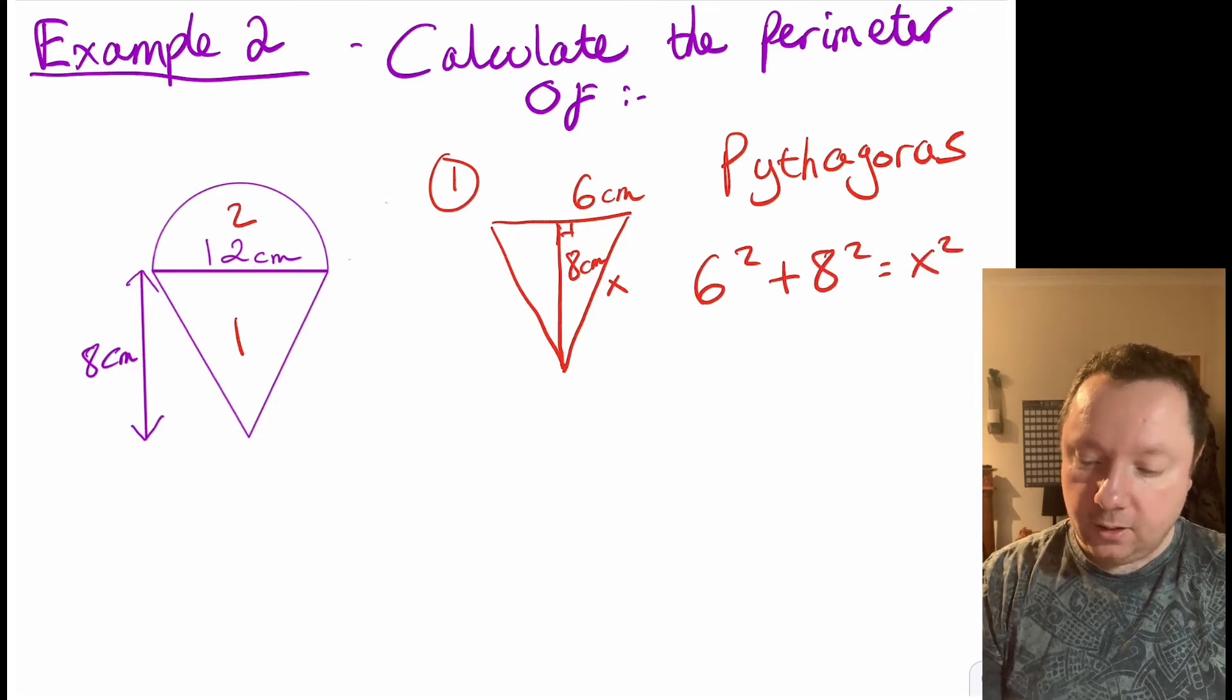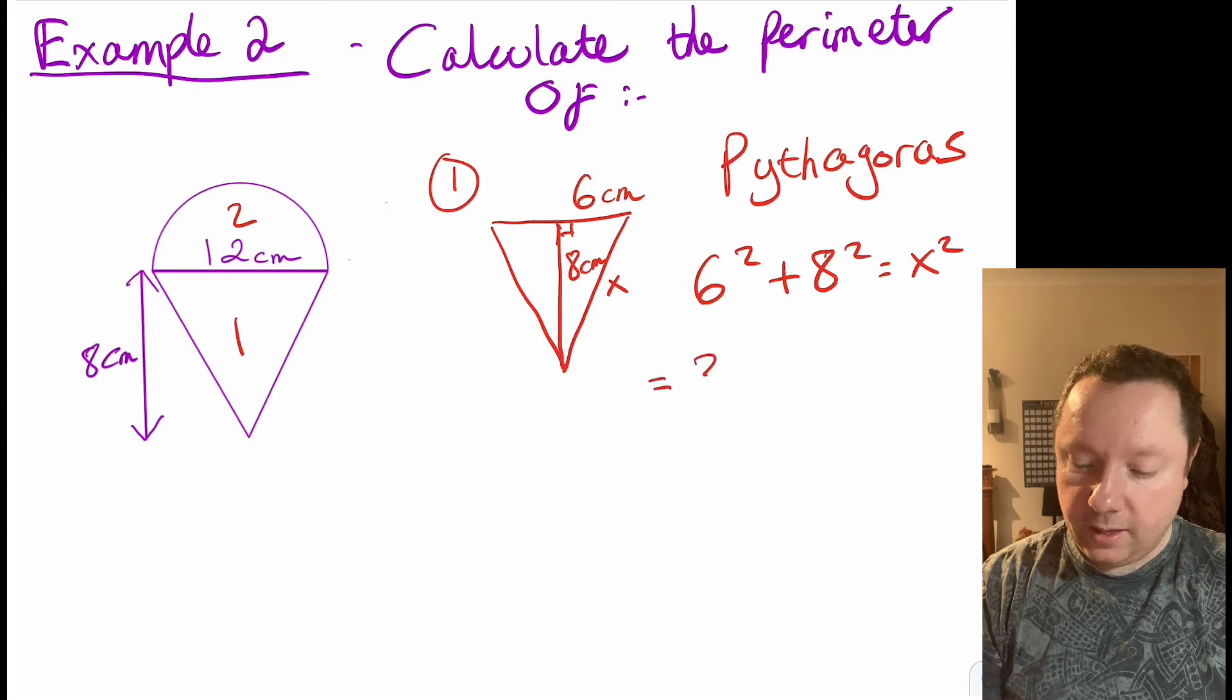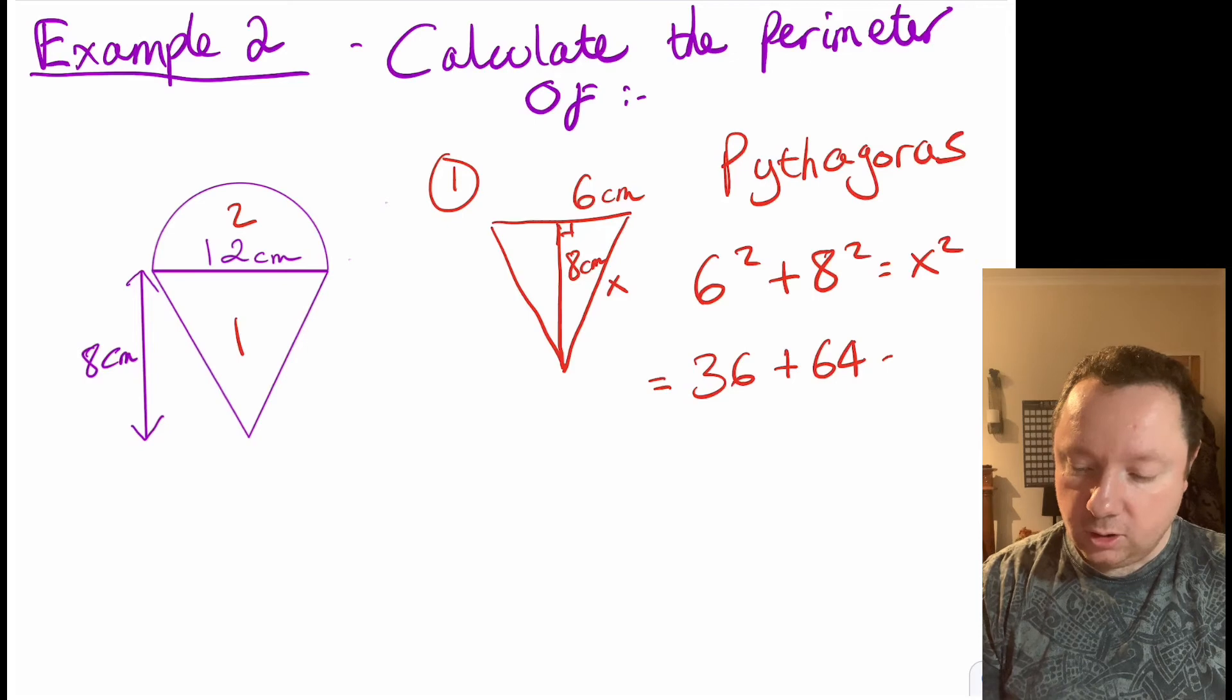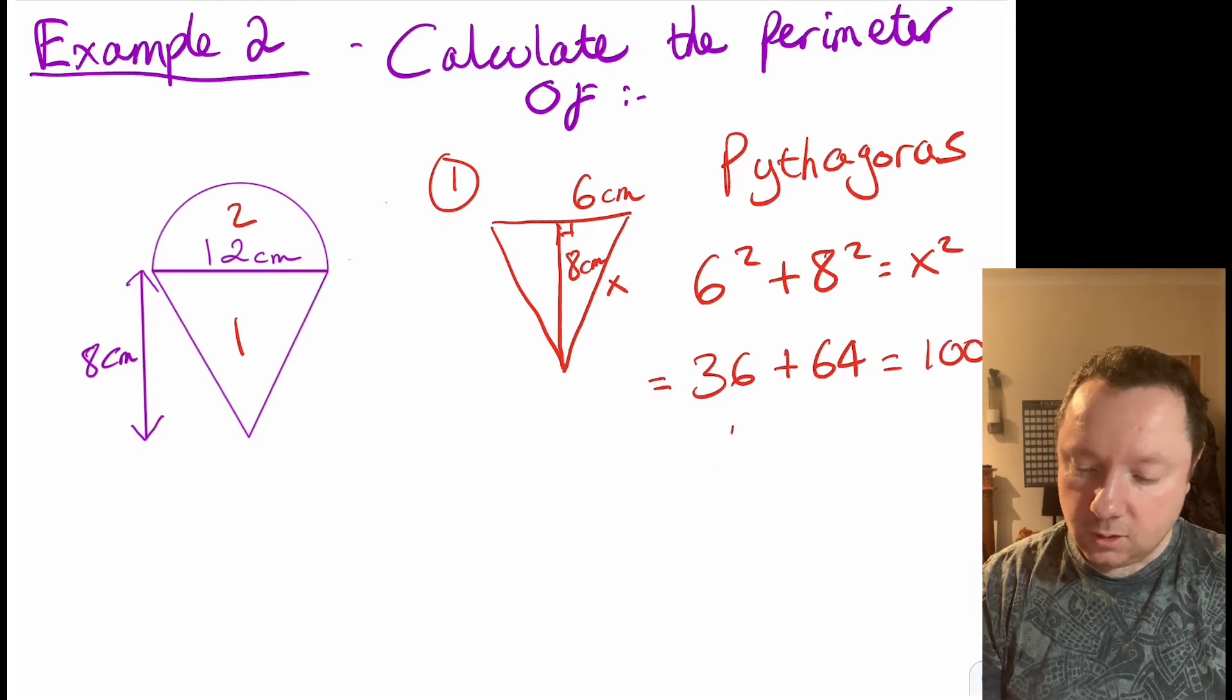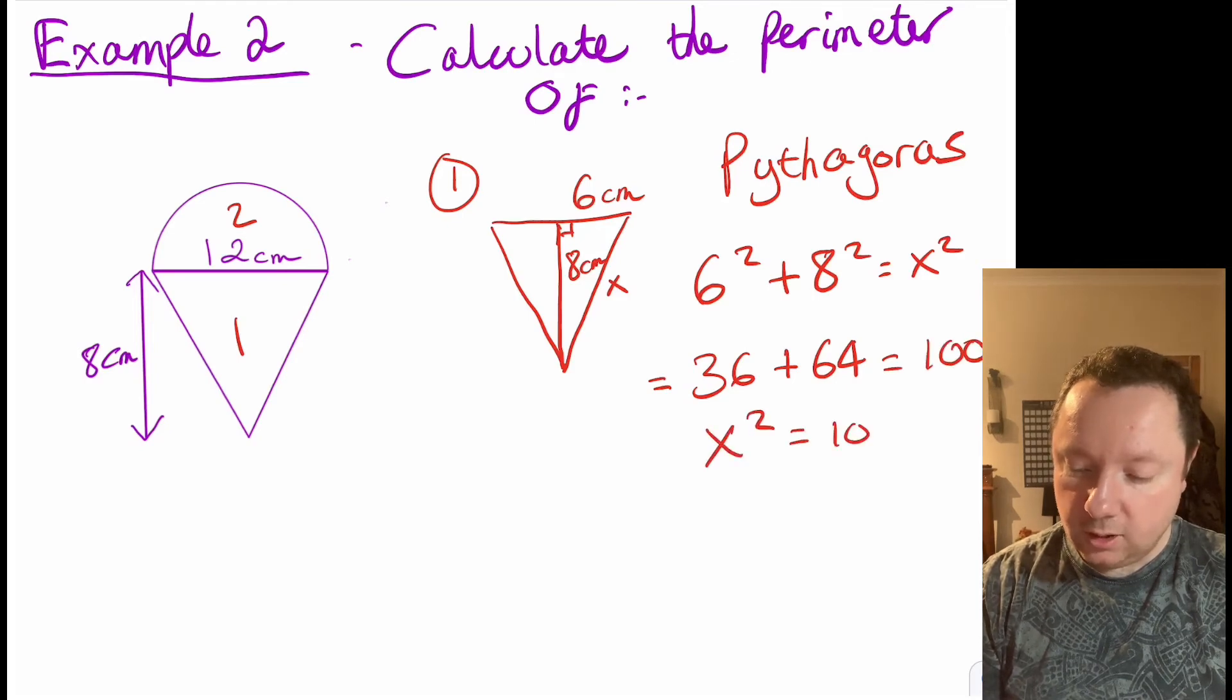So taking our time on that sum, we've got 36 plus 64 which is 100. So since x squared equals 100, x is the square root of 100 which is 10.